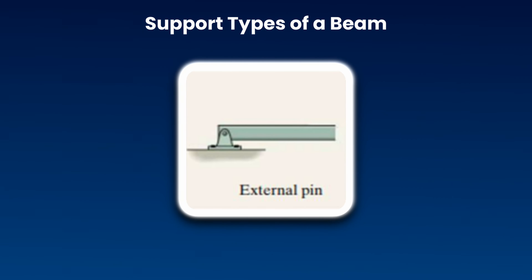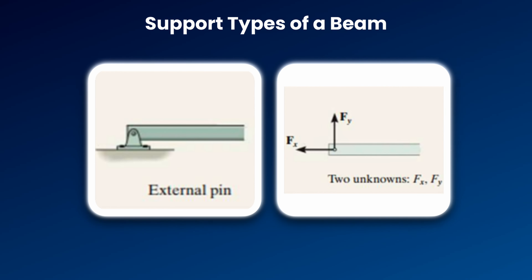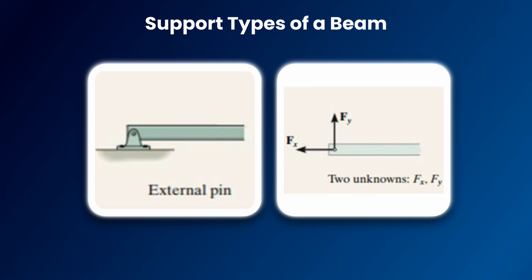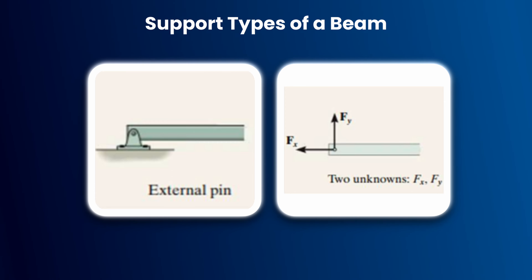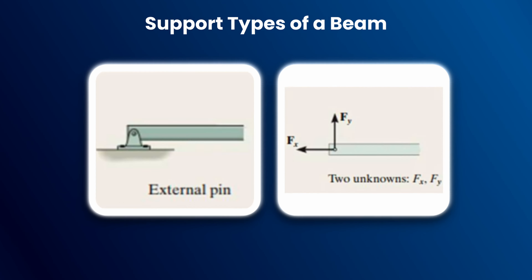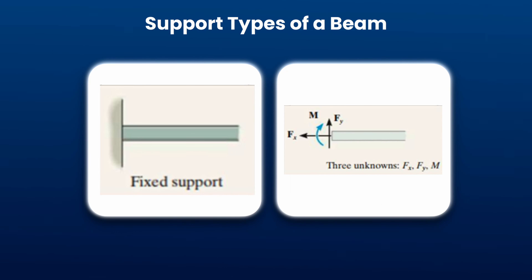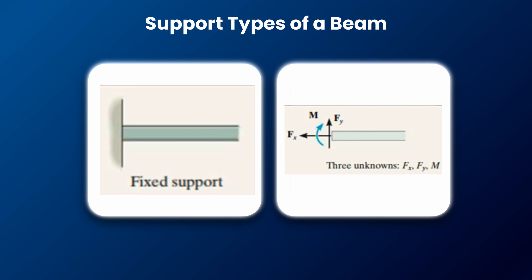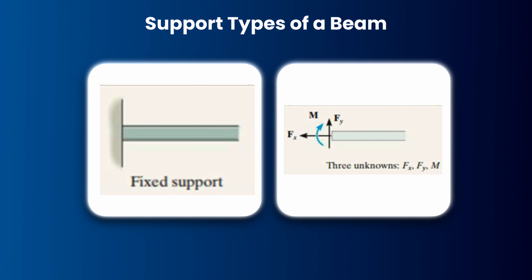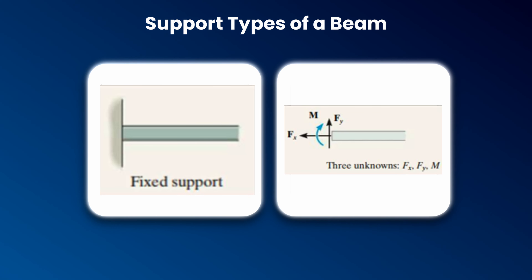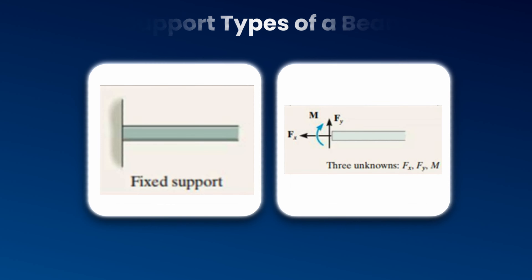The fourth one is the pin support. The beam cannot move along either the x or y direction, so we mark the reaction forces along both the x and y directions. The fifth type is the fixed support. Similarly, the beam cannot move along either x or y direction, so we mark reaction forces in both directions. Additionally, a moment cannot exist freely, so we should mark the moment as well.